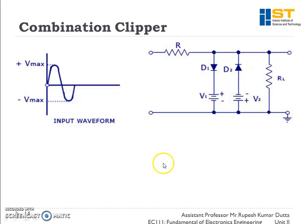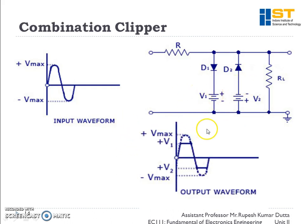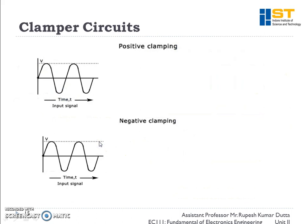Continuing with the last lecture, this is the combination clipper which has a positive clipper as well as a negative clipper. In this circuit we have to get the output voltage. Diode D1 is reverse biased when the input voltage is less than V1, and this diode is reverse biased when the input voltage is less than V2 in the negative region. So we will get this type of output voltage.